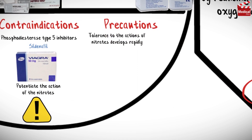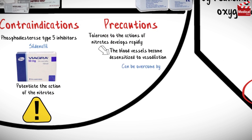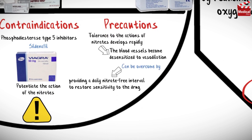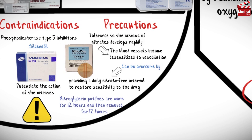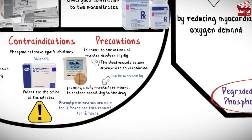Tolerance to the actions of nitrates develops rapidly as the blood vessels become desensitized to vasodilation. This can be overcome by providing a daily nitrate-free interval to restore sensitivity to the drug. For example, nitroglycerin patches are worn for 12 hours and then removed for 12 hours.